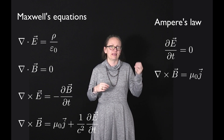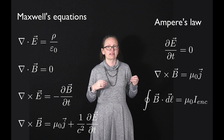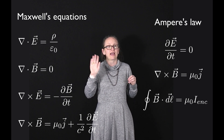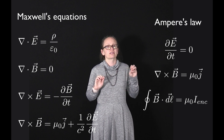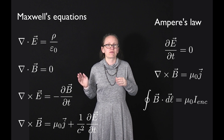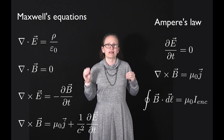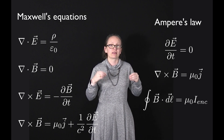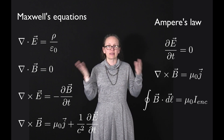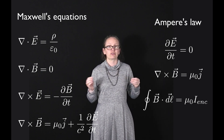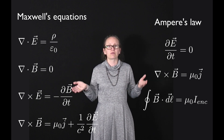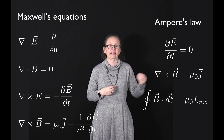It turns out this is just another way of writing Ampere's law. Ampere's law in integral form can be written as the integral around a closed loop of B dot dL equals mu naught times i enclosed. Maxwell's equations will form a basis for a lot of what you'll go on to learn about in the optics topic, because light is made up of electromagnetic radiation, which essentially consists of oscillating electric and magnetic fields.